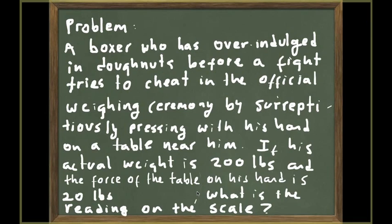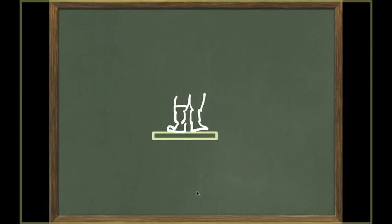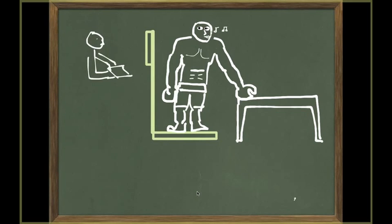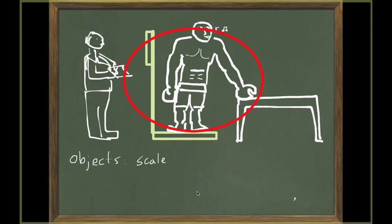Even when solving a problem as simple as this one, it is always good to follow the strategy for solving Newton's second law problems. The first step is always to do a sketch of the situation. So here we have our boxer standing next to a table, standing on top of the scale, with the judge writing down the weight, and our boxer cheating by pressing on the table with his left hand. The second step is to identify the object of interest — in this case, the boxer.